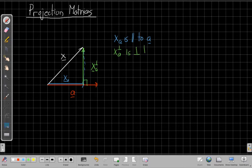But by visual construction, we can see that our original vector x is the sum of these two components, the part that's parallel to a, and then everything else, the orthogonal component.